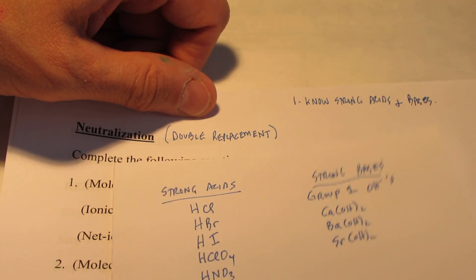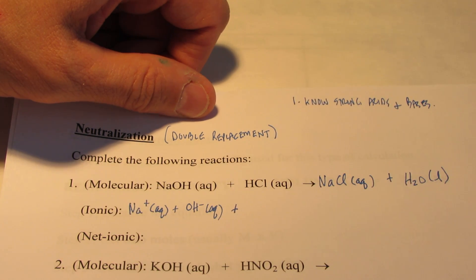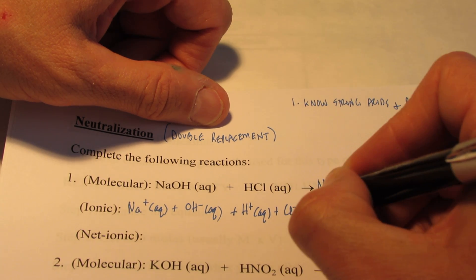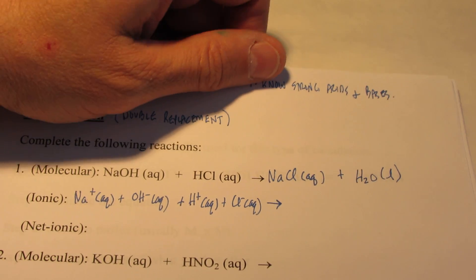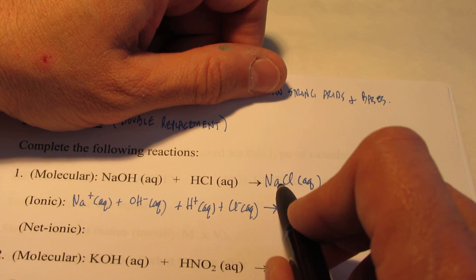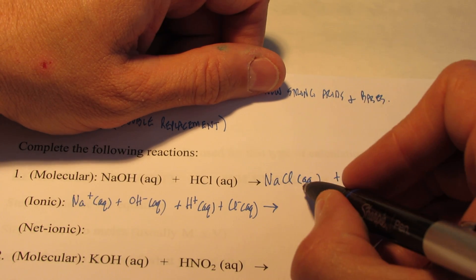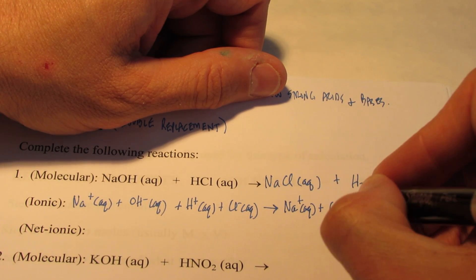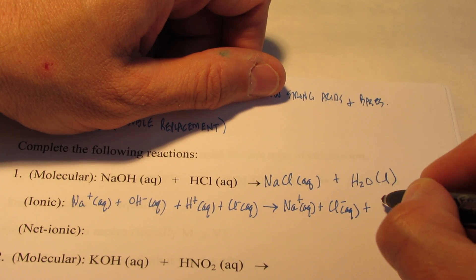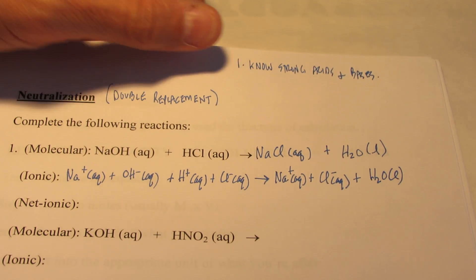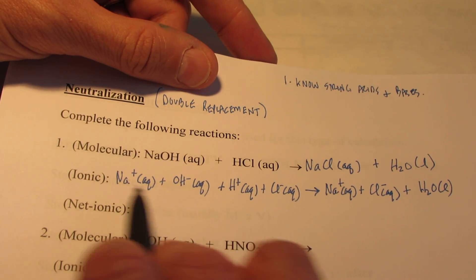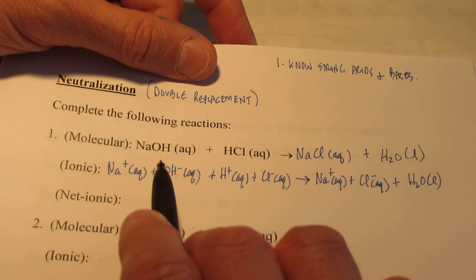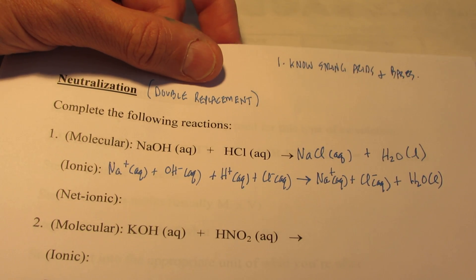Hydrochloric acid is one of our strong acids, so it dissociates 100% of the time into H+(aq) and Cl−(aq). For products, if it's a soluble ionic compound we dissociate it into its ions — sodium chloride is soluble, so it dissociates into sodium ions and chloride ions. Water sticks together. To get to our net ionic, we cross off spectators — the ones that are the same on both sides, the ones that don't really react. So what's the same on both sides? Take a look.